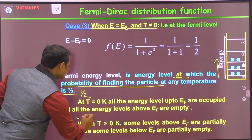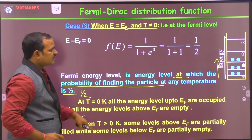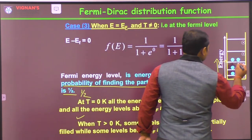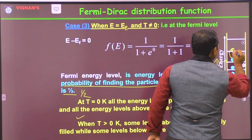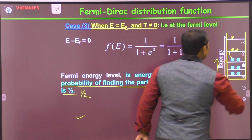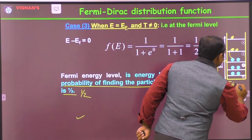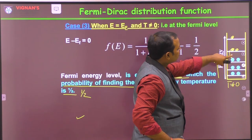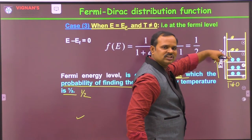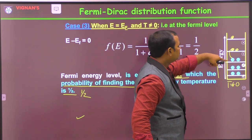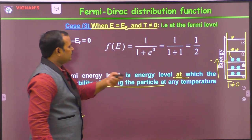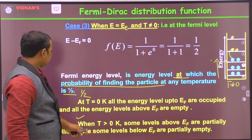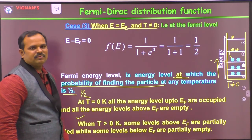At T > 0 Kelvin, some of the electrons at energy levels close to EF will gain thermal energy and move to higher energy states. So when temperature is not zero, electrons near the Fermi level take energy from heat and get excited to higher energy levels, resulting in a change in the Fermi energy distribution.